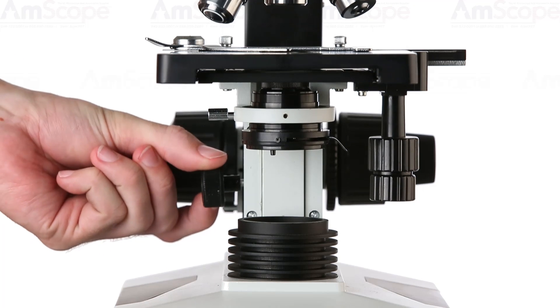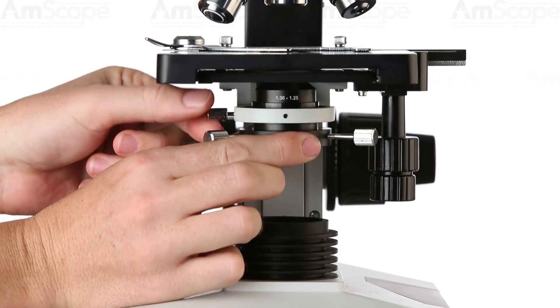Replacing the condenser is a simple process. The condenser can be raised or lowered by using the adjustment knob. While supporting the installed condenser, loosen the locking screw until the condenser can easily slip out. Next, insert the dark field condenser fully, then securely tighten the locking screw.